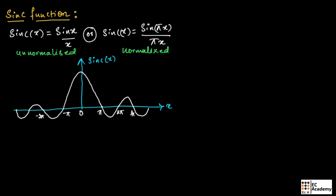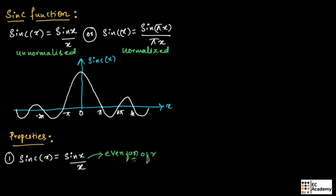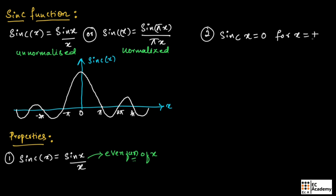For the normalized sinc function, at these points it can have integer values. Now let us understand the properties of sinc function. The first property states that sinc of x is equal to sin(x)/x, which is an even function of x. The sinc function is evenly distributed towards the right half as well as the left half of the graph. The second property states that sinc(x) will be equal to 0 for x equal to plus or minus nπ, which is very important for solving problems.